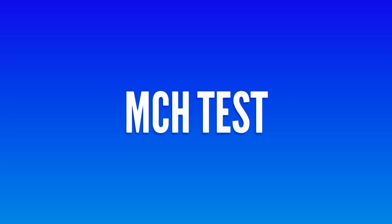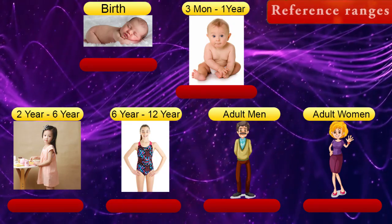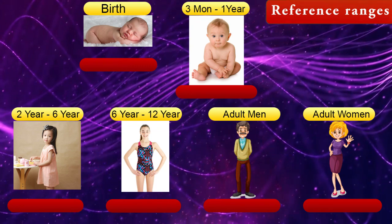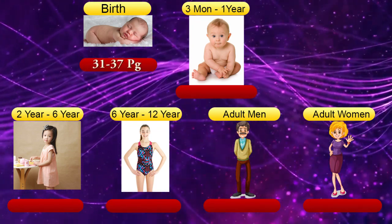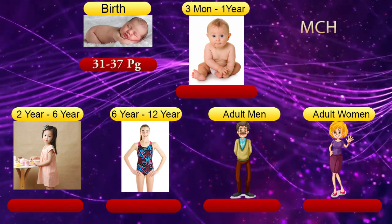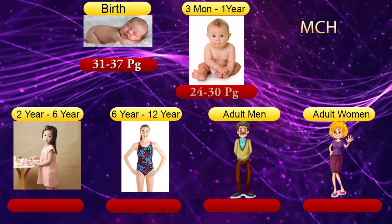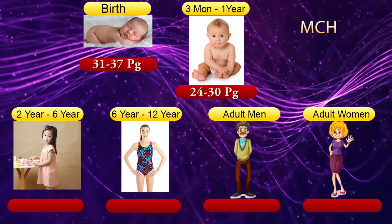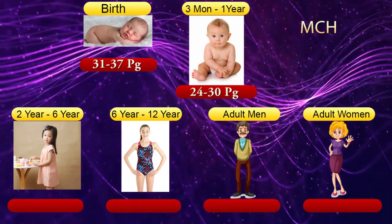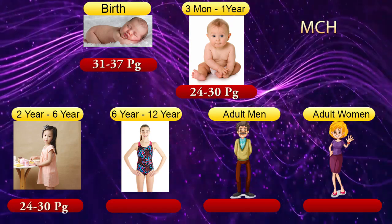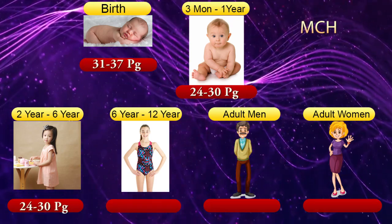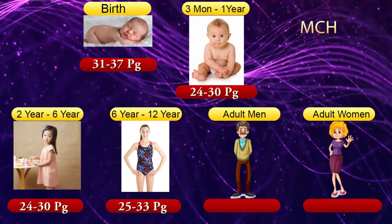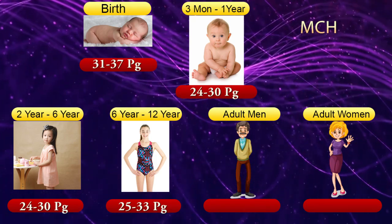Mean corpuscular hemoglobin (MCH) reference ranges. At birth: 31–37 picograms. From 3 months to 1 year: 24–30 picograms. From 2 to 6 years: 24–30 picograms. From 6 to 12 years: 25–33 picograms.